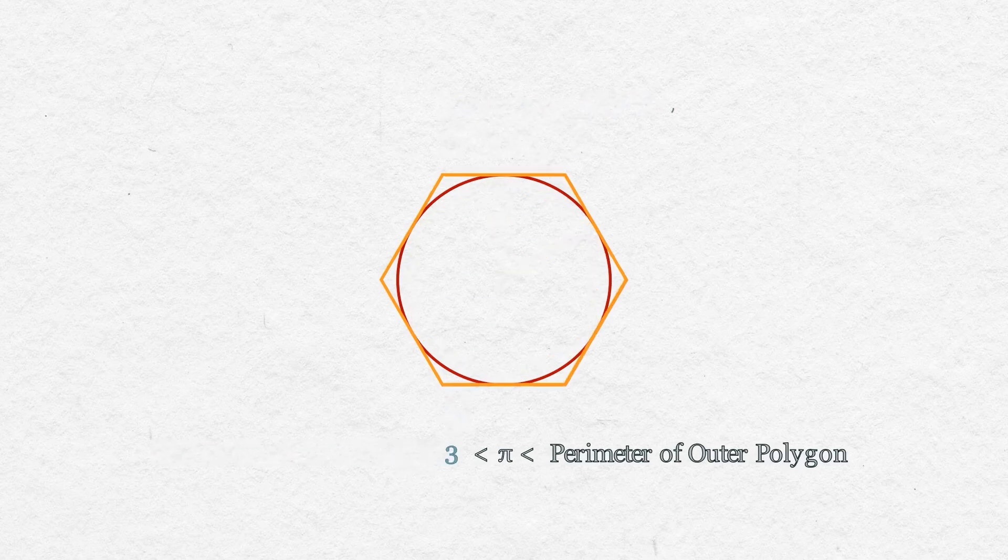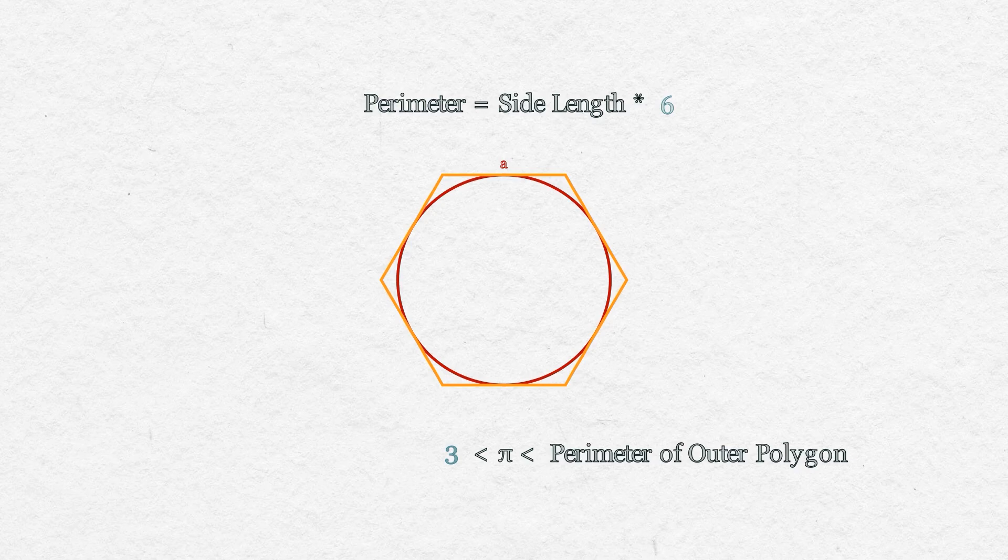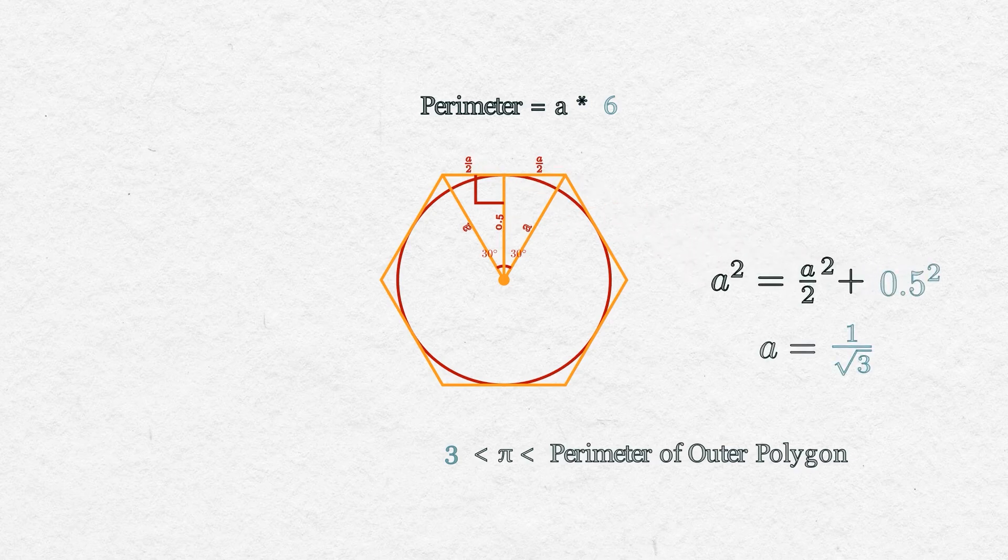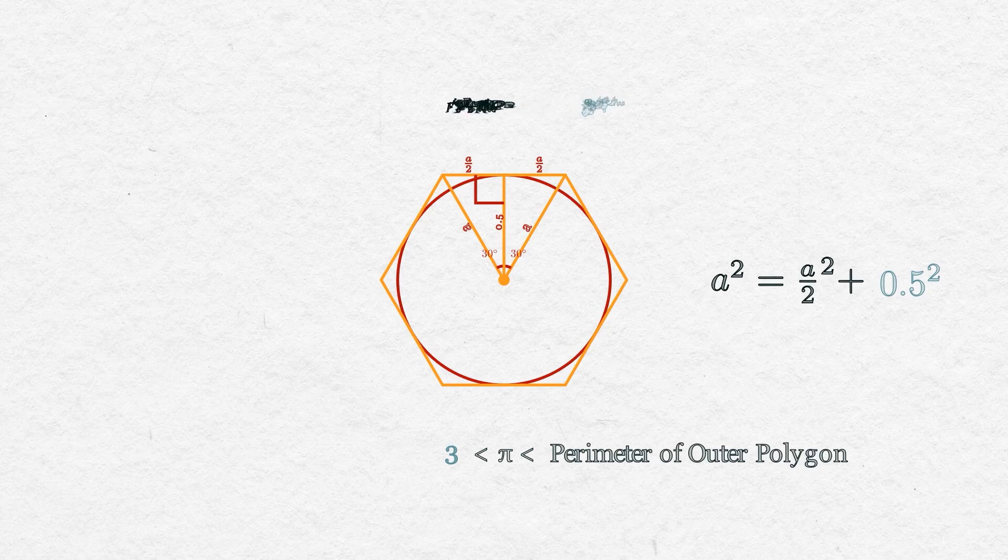For the outer hexagon, we have to do a bit more calculation. Start with assuming side length to be A, and then divide it into equilateral triangles. But here we know the height of the triangle, which is equal to the radius, instead of the side length. And now we can use Pythagorean theorem to find the length of the sides, and then the perimeter, which comes out to 2 root 3, evidently giving us this inequality for pi.